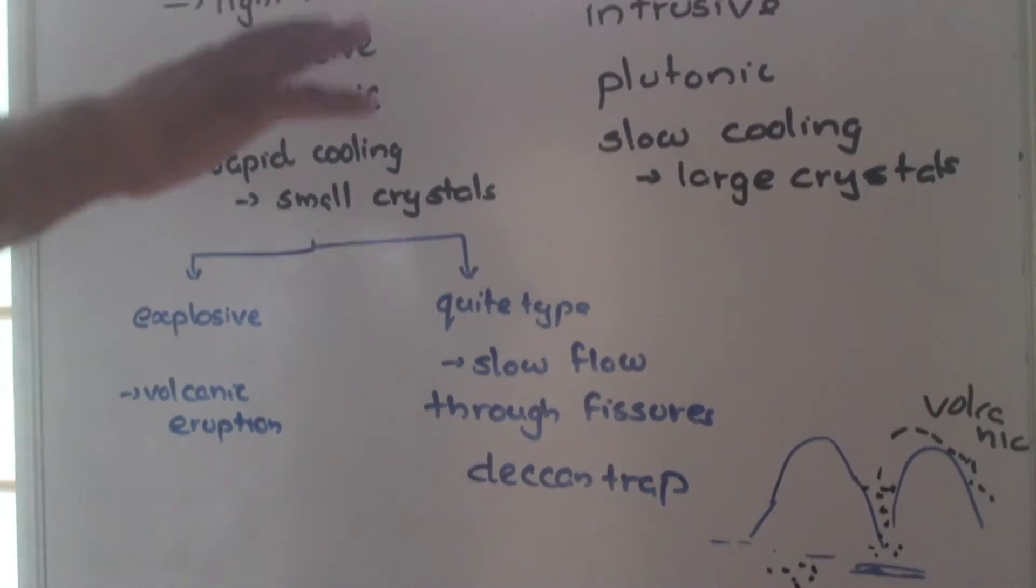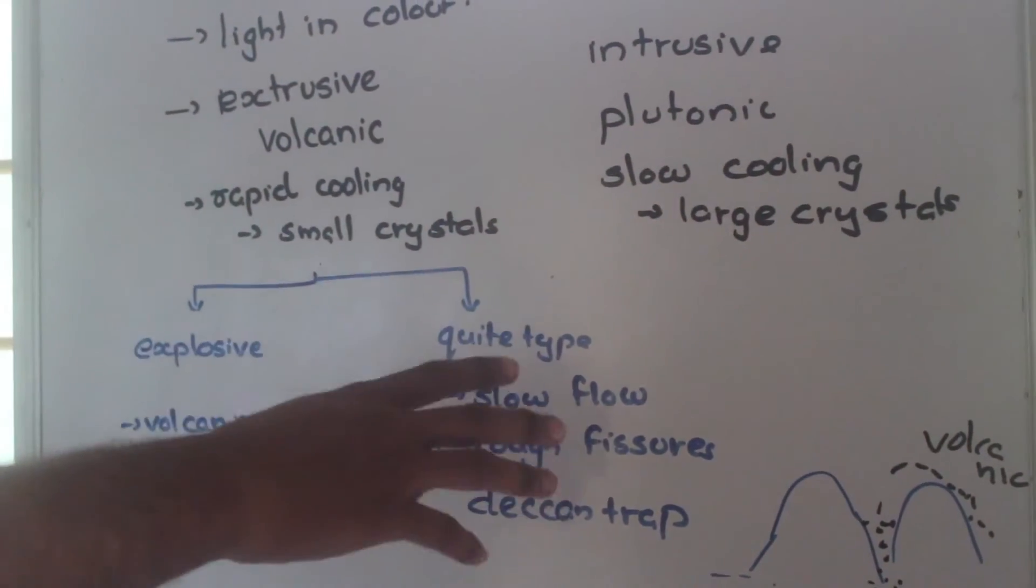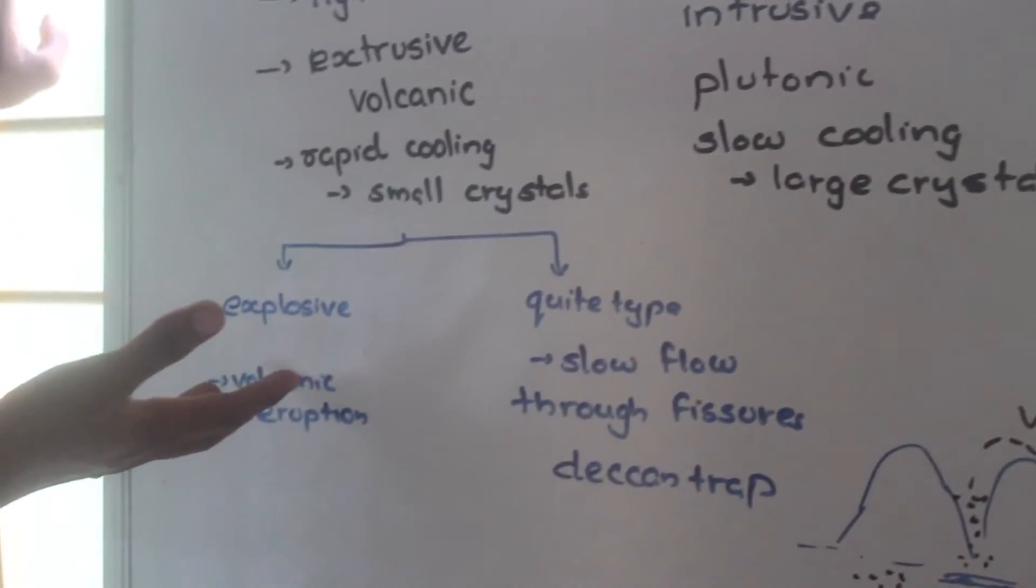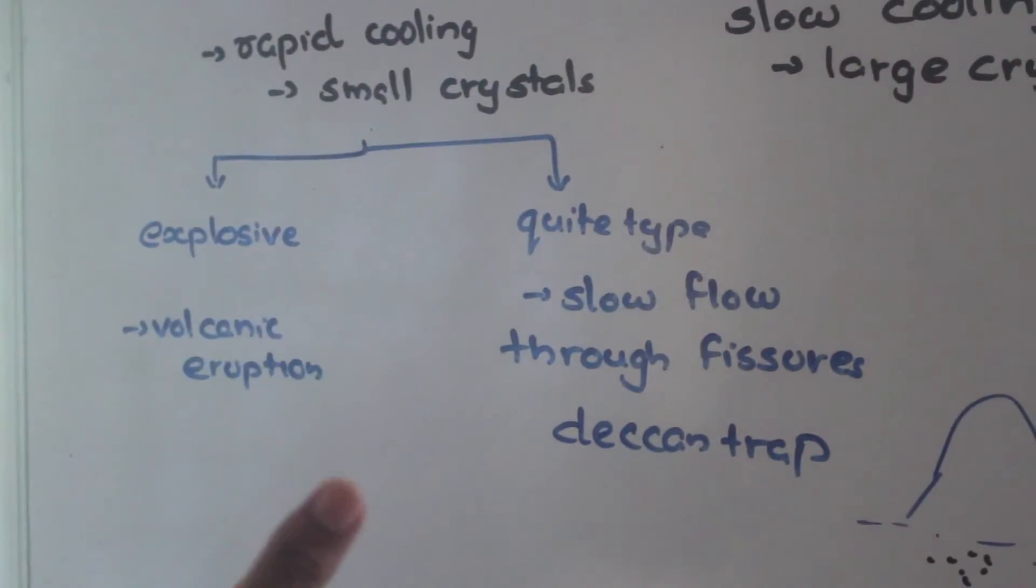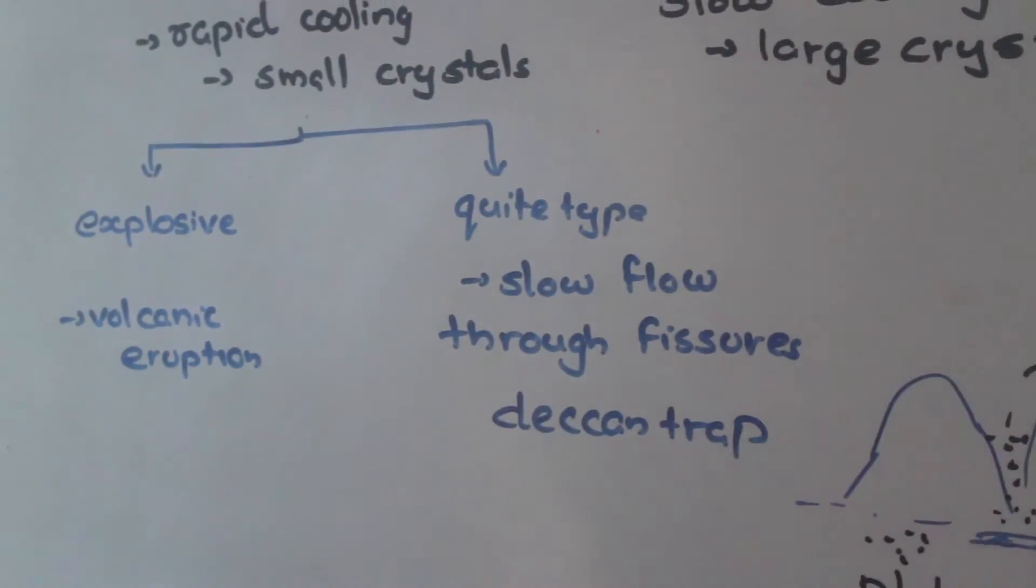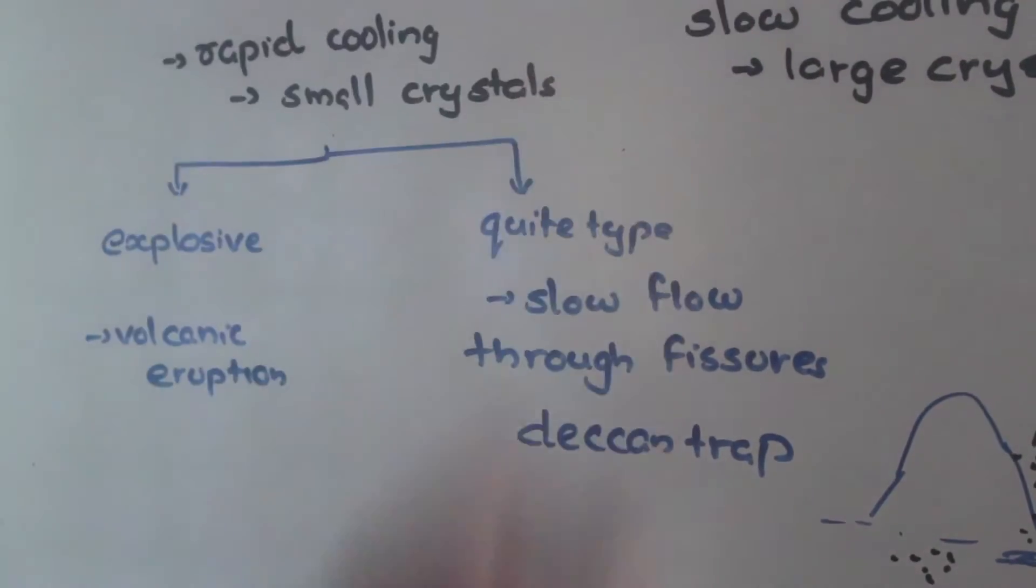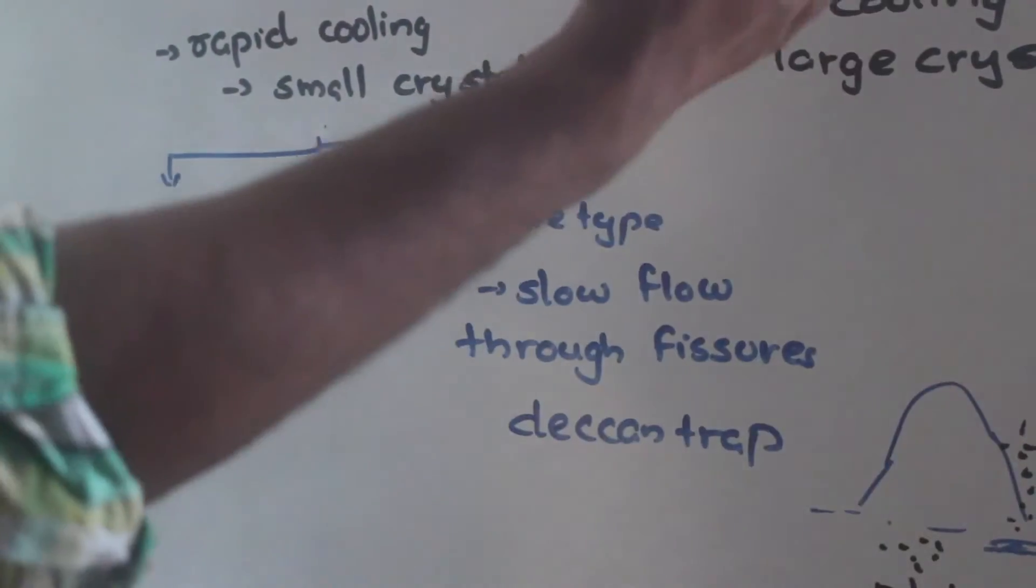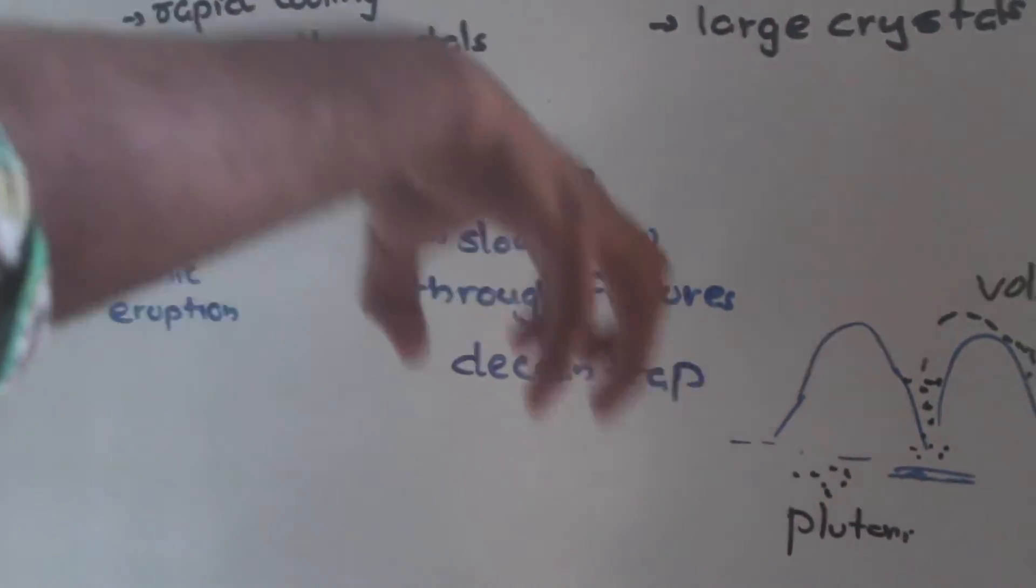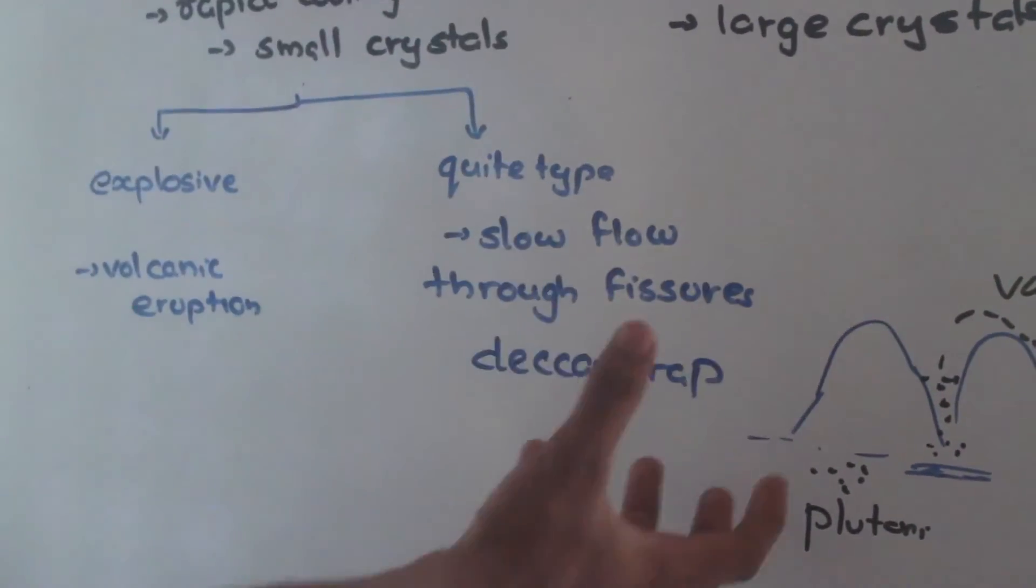These extrusive rocks are again divided into two: one is explosive and the second one is quiet type. Explosive means, for example, in a volcano, the magma comes out by an explosion with a huge noise, and if this magma undergoes solidification and gives us a rock, we call it explosive rock.